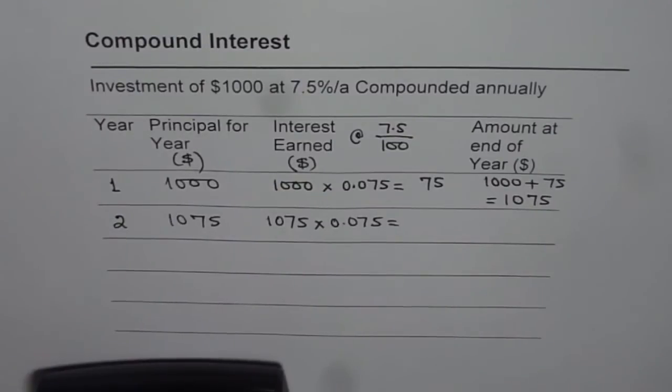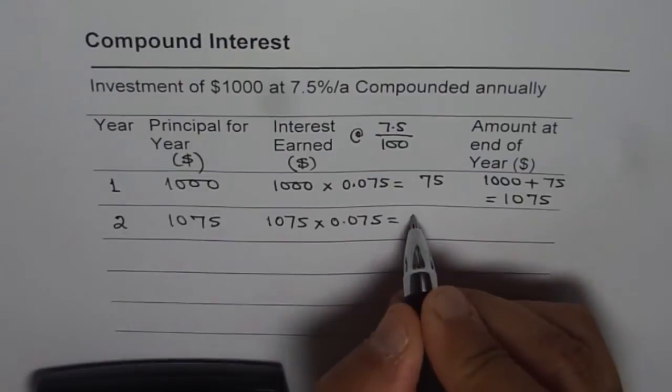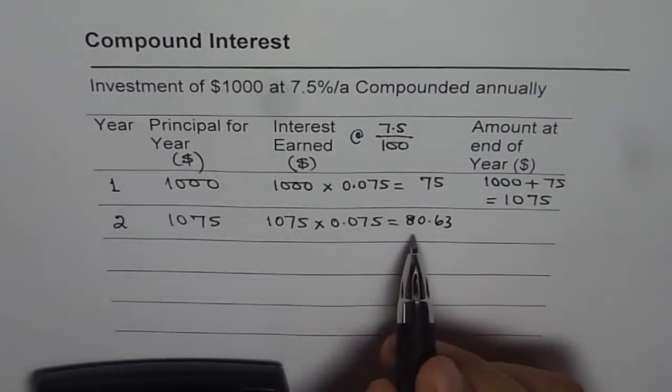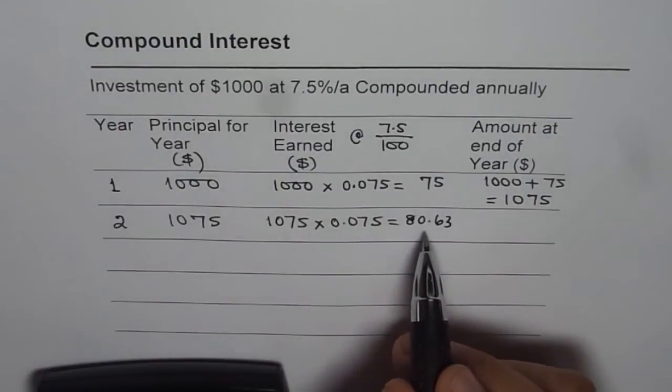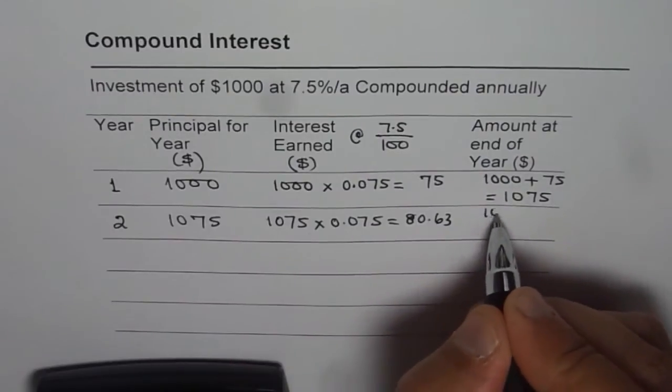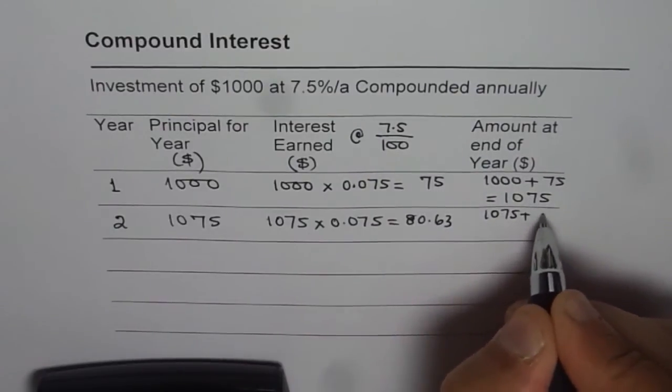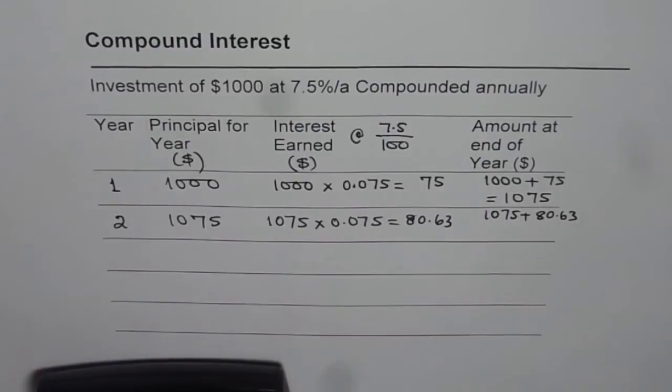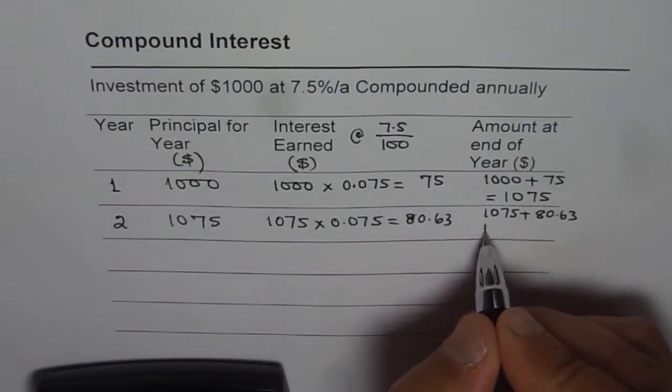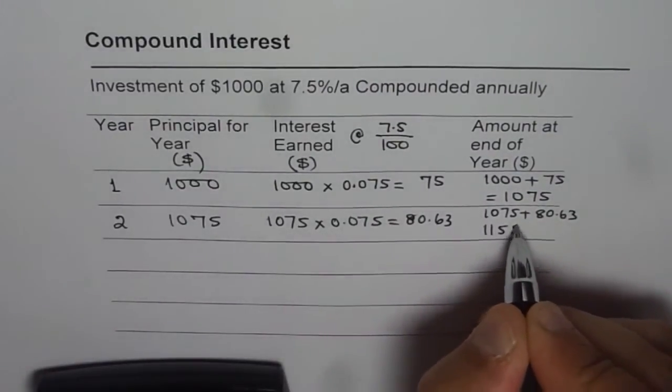1,075 times 0.075 gives us 80.625. I will write 80.63 here rounding to two decimal places. Since that is the interest earned during the second year and we started with $1,075, total amount should be 1,075 plus 80.63. We will add these two and the final amount at the end of the year will be 1,155.63.